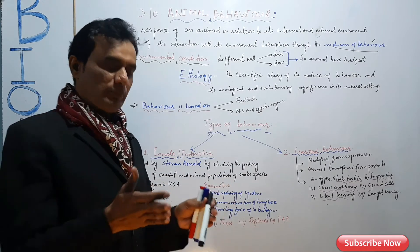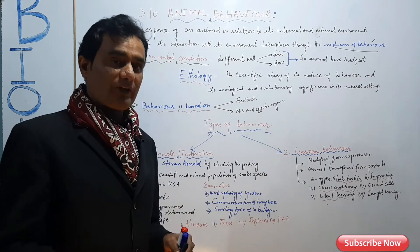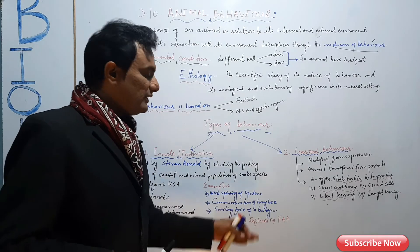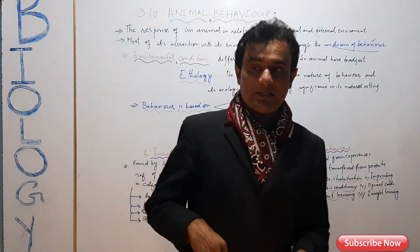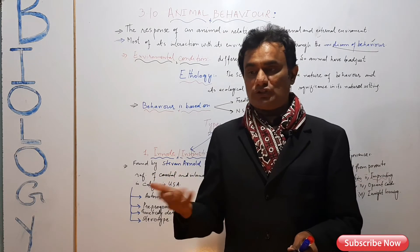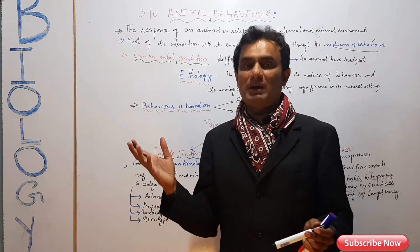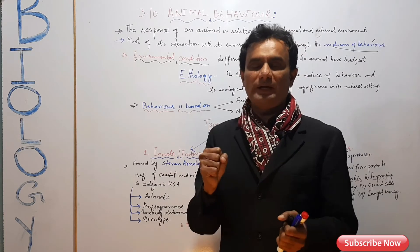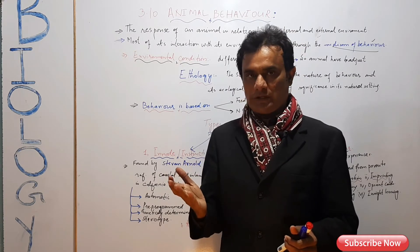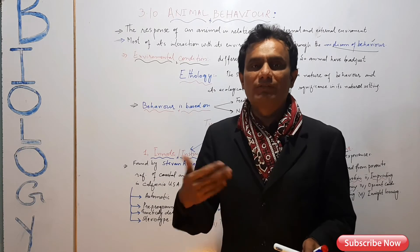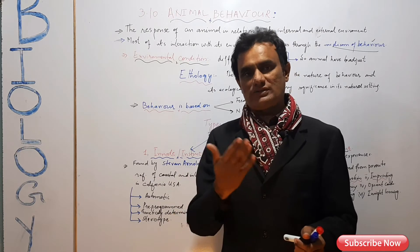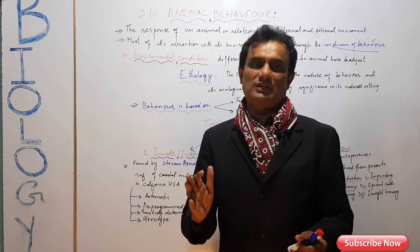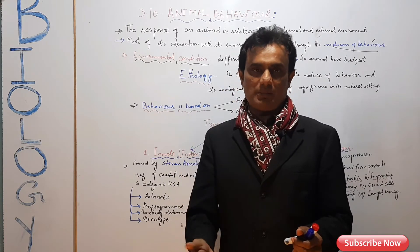For example, a spider does not need to learn to spin a web — it comes from its genes. Similarly, a baby smiles when it sees any face — this is an innate response. In humans, reflex actions are also innate — genetically determined automatic responses, as discussed in the last video.